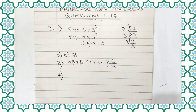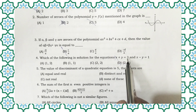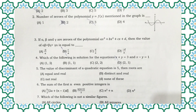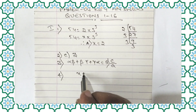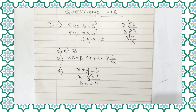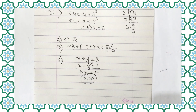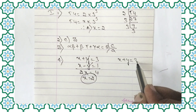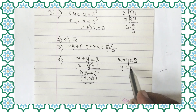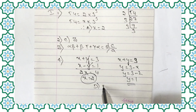Now let us move to question number 4. Which of the following is a solution for x plus y equals 3 and x minus y equals 1? Adding the two equations: 2x equals 4, so x equals 2. Substituting back, y equals 3 minus 2, so y equals 1. The right option is option D, (2, 1).